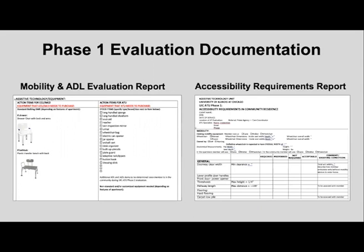The second report from phase one is the accessibility requirements report. This report provides specific information for housing locating purposes about what accessibility features the apartment should have — such as whether it needs an elevator, stairs, carpet, or hardwood floors. If your prime agency does not perform its own housing locating and uses a subcontractor, please provide the subcontractor with this report and our clinicians' recommendations so they have this information on hand when locating the apartment.